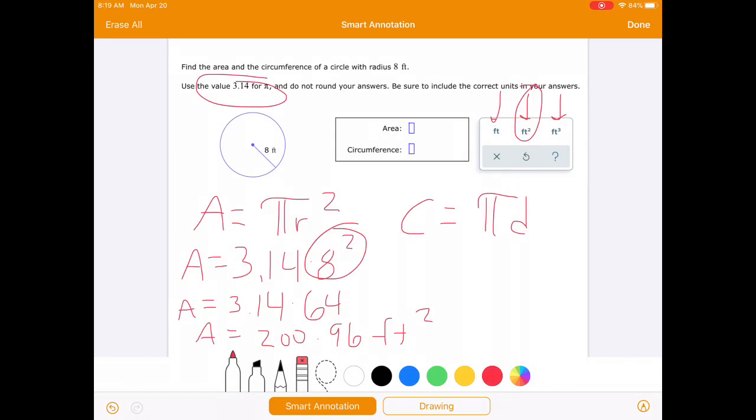And technically, what I should be doing, as soon as I put 3.14 in for pi, I should be saying this is approximately equal to. Because pi, remember, is an irrational number that goes on forever and ever and ever. And we will never have an exact decimal for pi. So as soon as we substitute 3.14 in for pi, we get an approximate answer. So the area of this circle is approximately 200.96 feet squared.